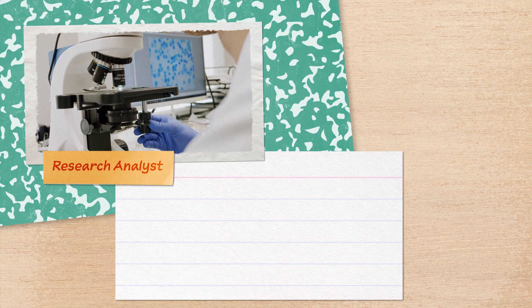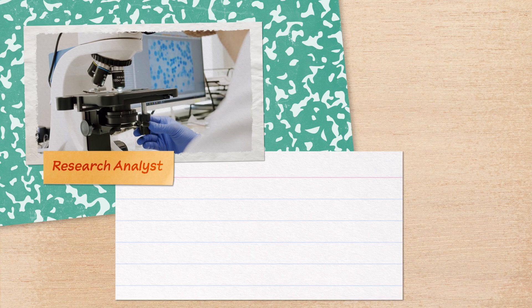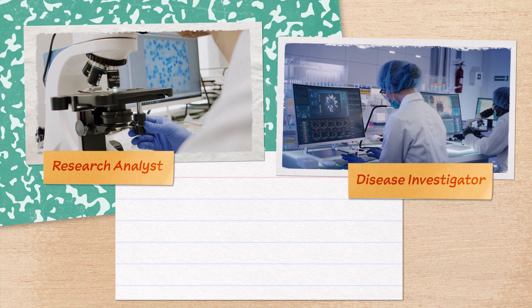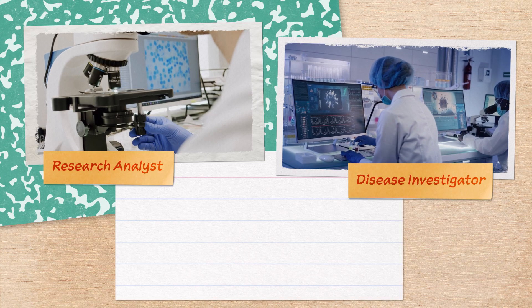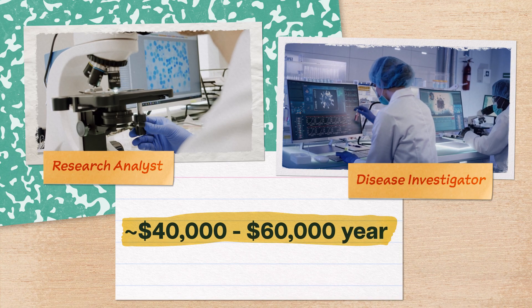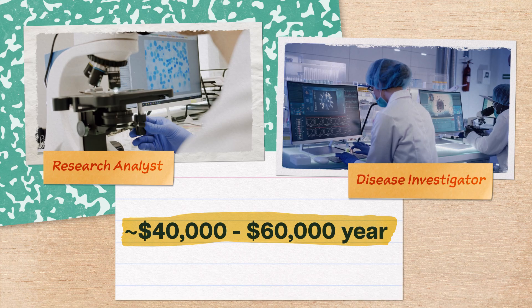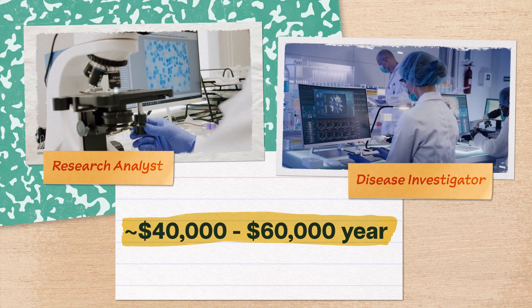And for those diehard scientists in the crowd, you could become a research analyst and put your data skills to use, or a disease investigator who helps manage all of the as-yet uneradicated diseases. Both of those jobs make somewhere between $40,000 to $60,000 or more if you have experience or a master's degree.